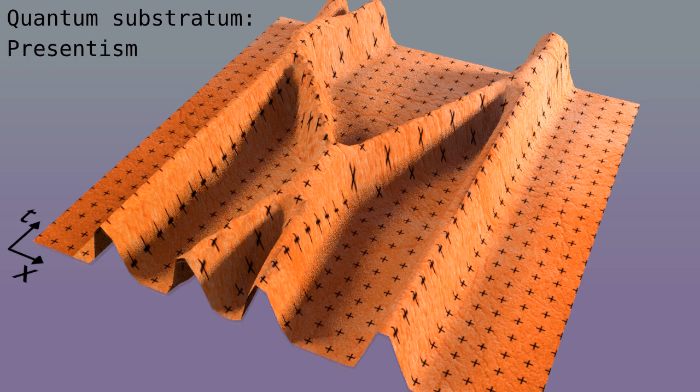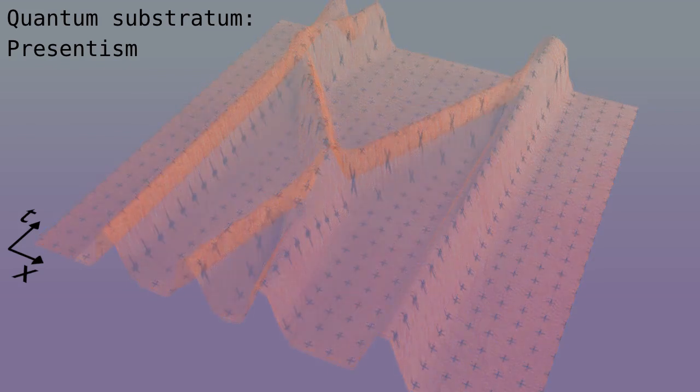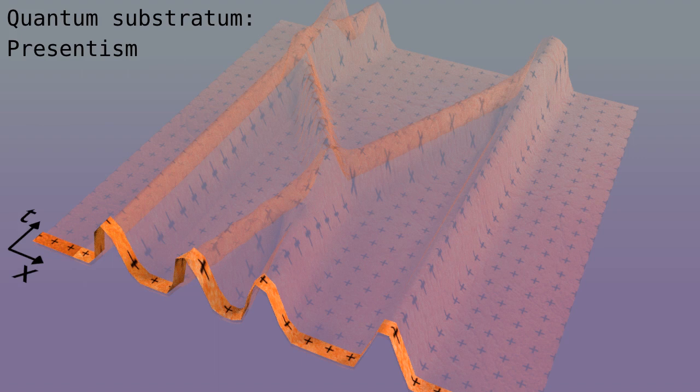Now, what would be the presentist view? Well, most of the block would not exist. Only a sliver, the present moment, would exist. And that moment would change in time.